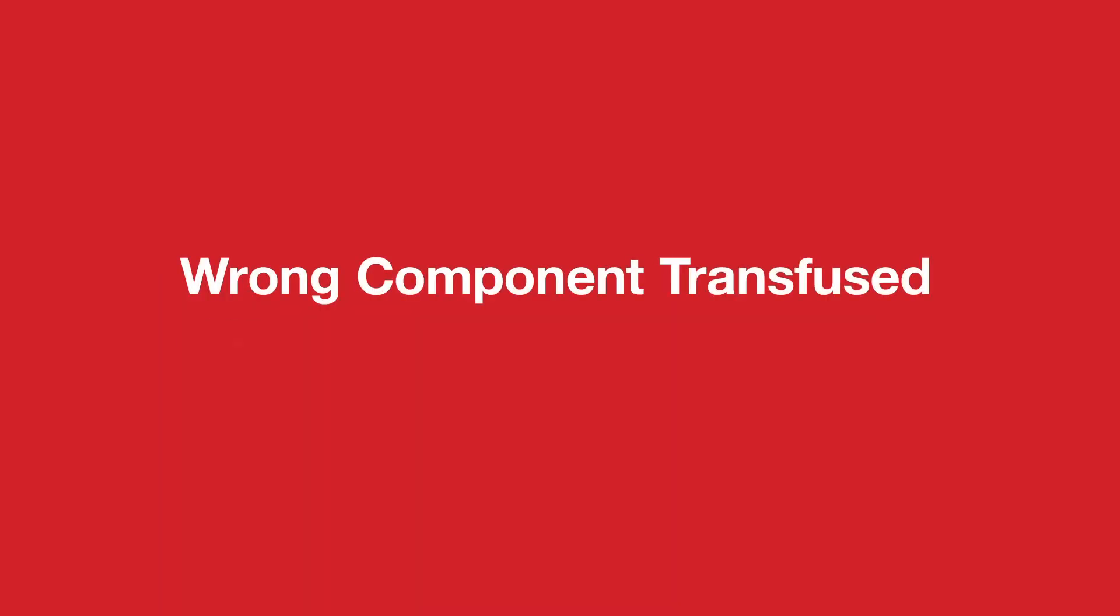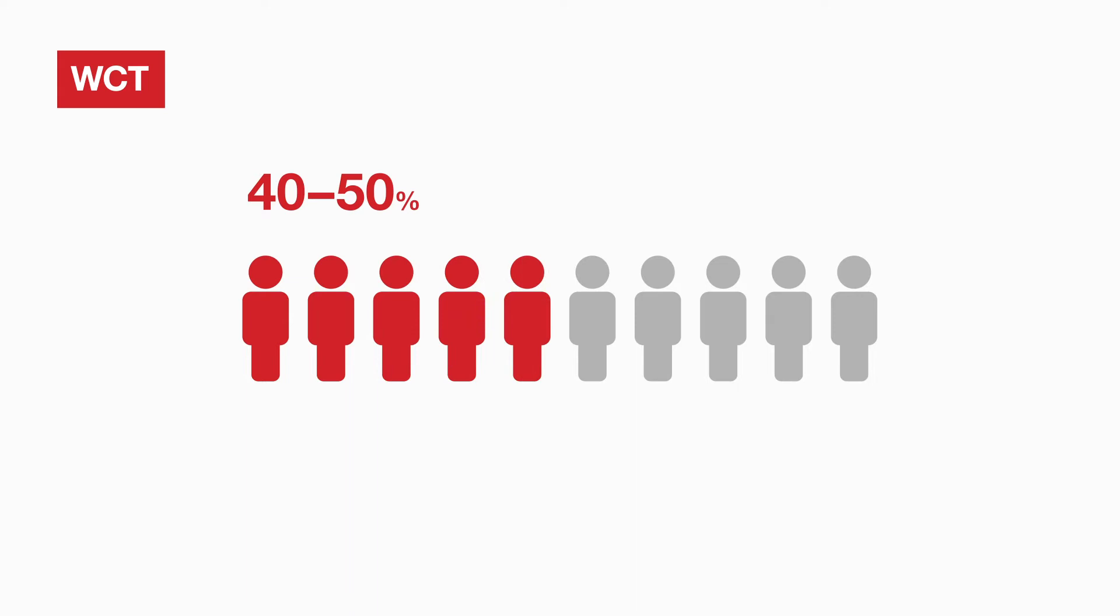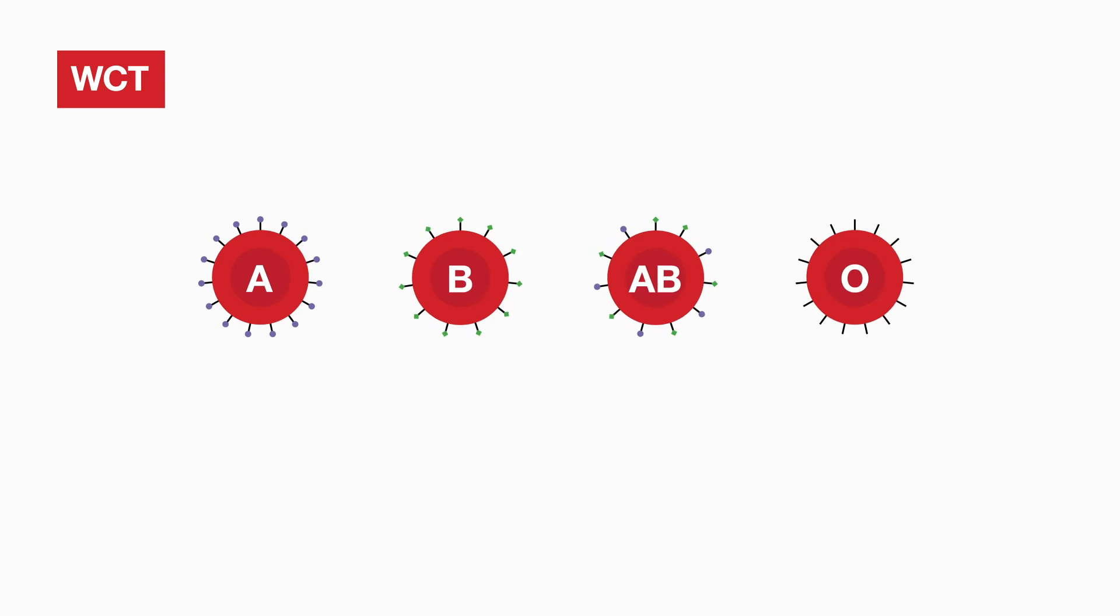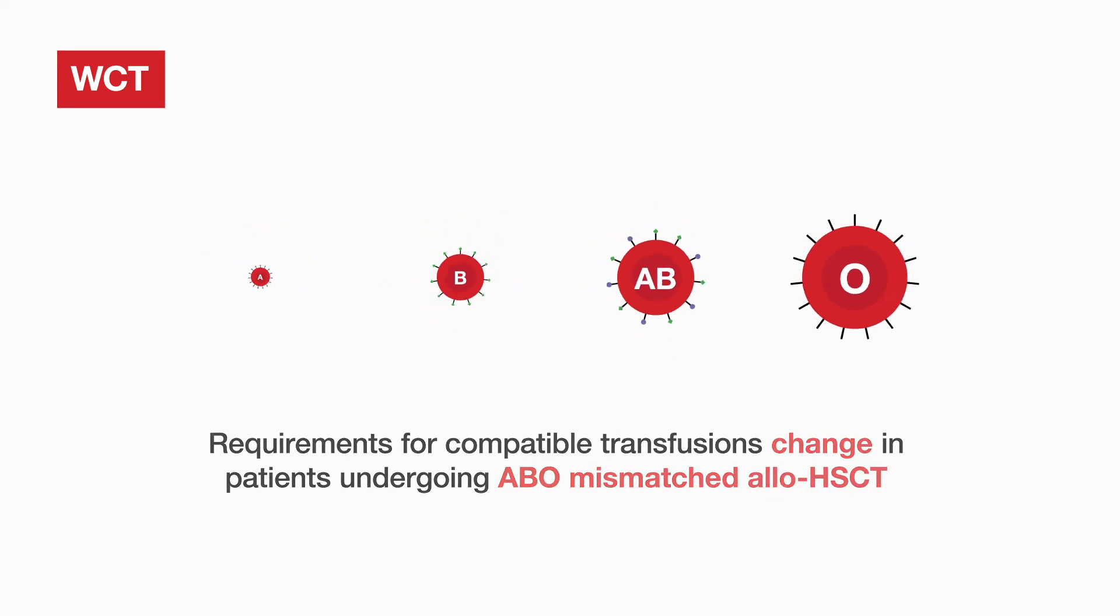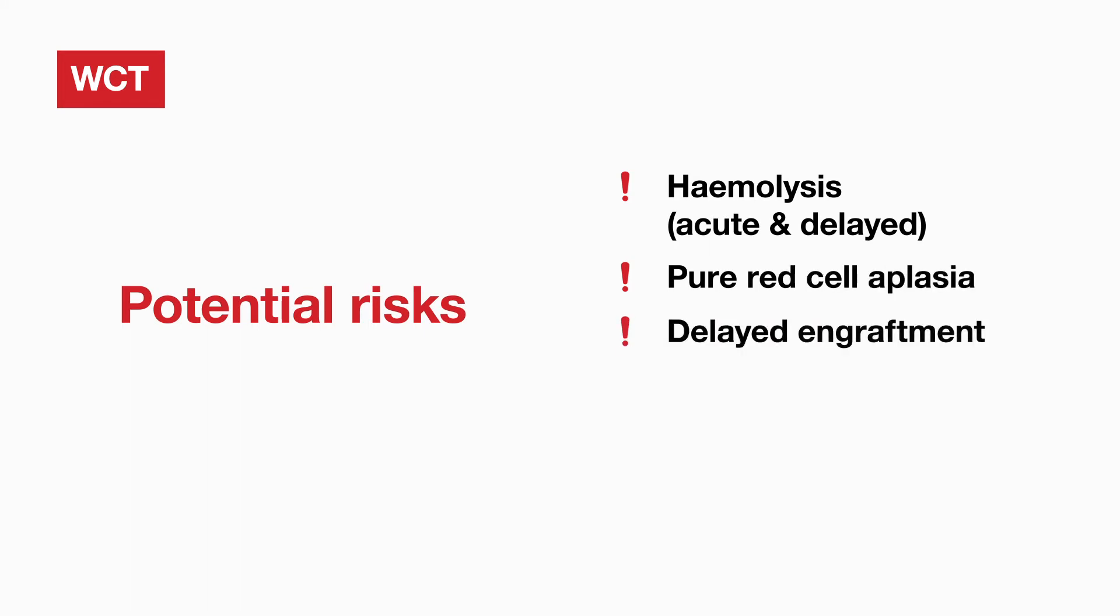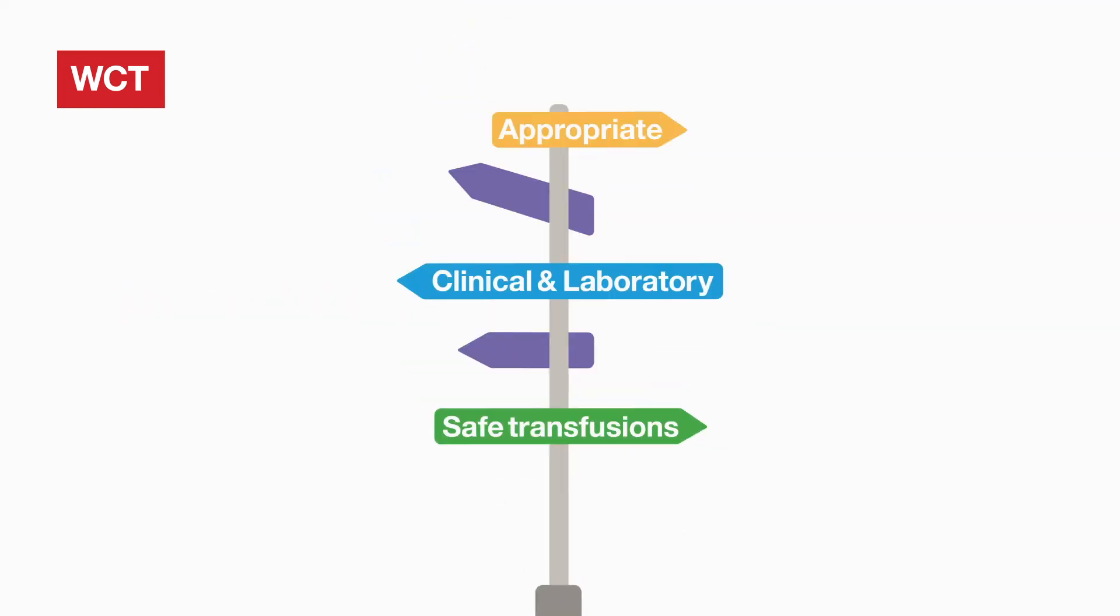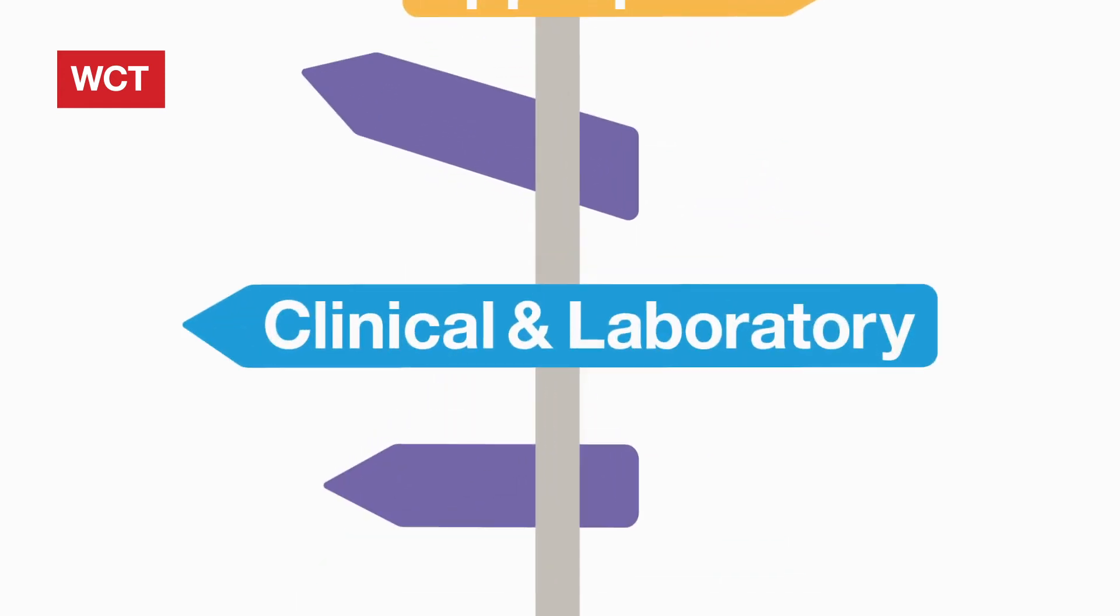Looking at errors where wrong component was transfused, about 40-50% of allo-HSCT are ABO mismatched. Allogenic HSCT patients' blood group requirements for transfusion may change during different stages of the transplant. Potential risks in ABO mismatched allo-HSCT patients include hemolysis, both acute and delayed, pure red cell aplasia, delayed engraftment, and increased red cell transfusion requirement. It is important that appropriate clinical and laboratory transfusion decisions are made to ensure safe transfusions.